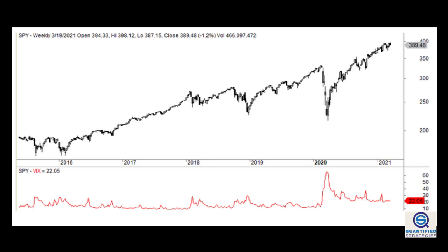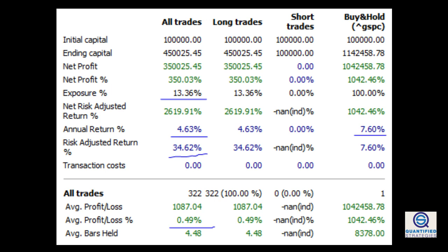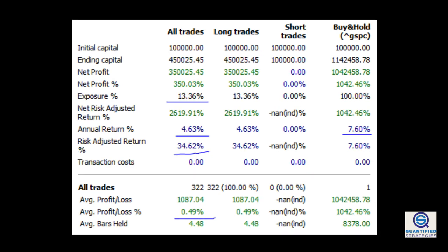Let's backtest a strategy combining VIX and Bollinger Bands to trade S&P 500. We make the following trading rules: buy the S&P 500 if the VIX breaks above its 10-day upper band, two standard deviations away from the moving average. Exit when today's close is higher than yesterday's high. The strategy makes 0.45% per trade, which translates into 4.6% annual returns. The equity rises steadily most of the time. The return is below buy and hold's 7.6% annual returns, but the strategy is invested only 13% of the time.